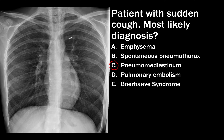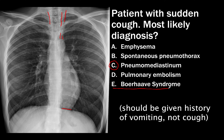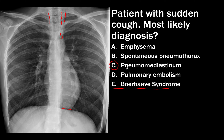The abnormality that we see here is hyperlucency, or lucent lines, in the superior aspect of the mediastinum, as well as hyperlucency along the left hemidiaphragm. These are all signs of pneumomediastinum. It's possible that the patient could have Boerhaave syndrome, but pneumomediastinum is the more specific and correct answer.